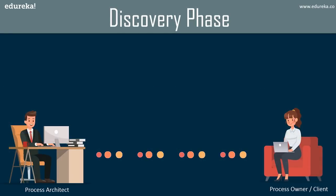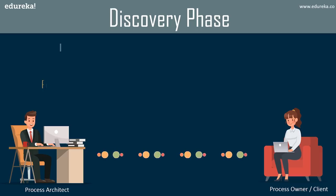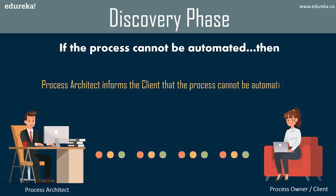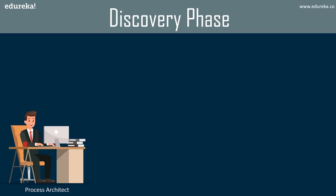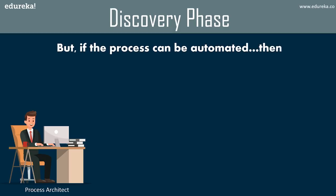Once all requirements are analyzed, you have to decide whether the process can be automated or not. If the process cannot be automated, the process architect directly informs the client and lists the reasons. But if the process can be automated, the next step is measuring the complexity — checking all dependency issues, network issues, RAM issues, and understanding how many users will use that task.